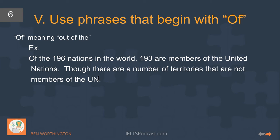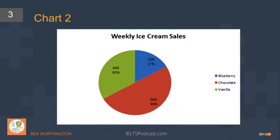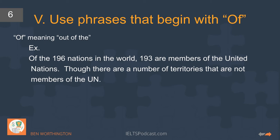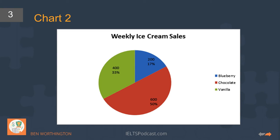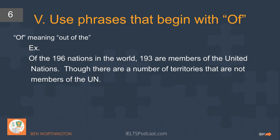Using 'of' to mean 'out of': 'Of the 196 nations in the world, 193 are members of the United Nations.' Or: 'Of total ice cream sales, chocolate represents half of the total.' Similarly, 'Of total weekly ice cream sales, 33% — a third — is vanilla.' Those are the two different ways we can use 'of.'